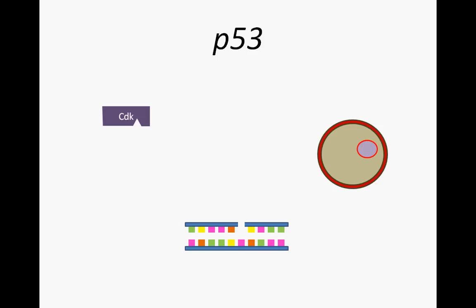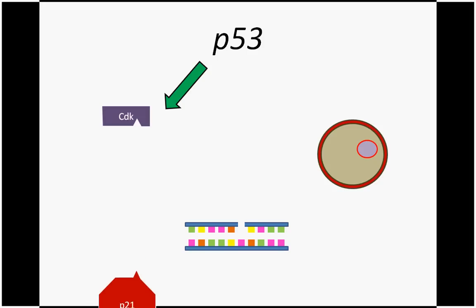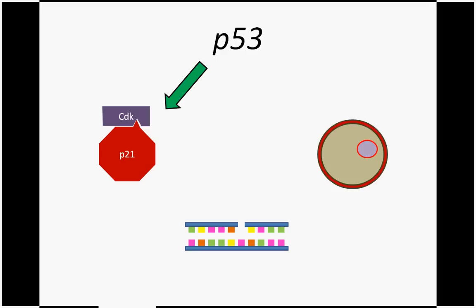P53 leads to the inhibition of progression through the cell cycle. One major way in which P53 slows growth is by stimulating the production of proteins that bind and inactivate CDK molecules, thus inhibiting cell cycle advancement.